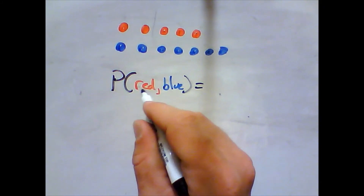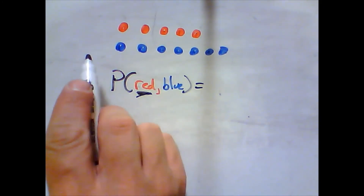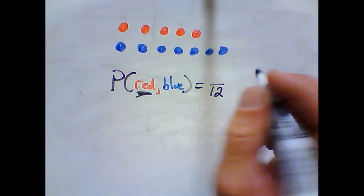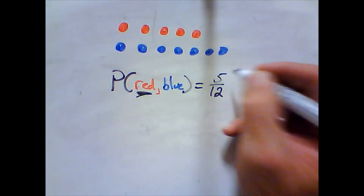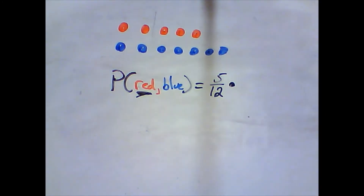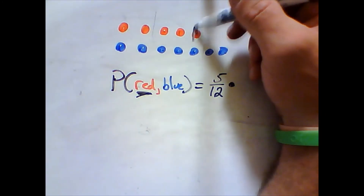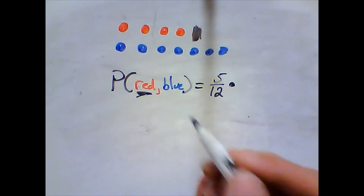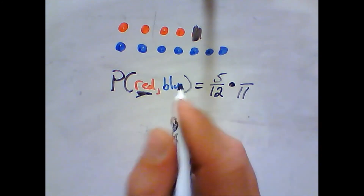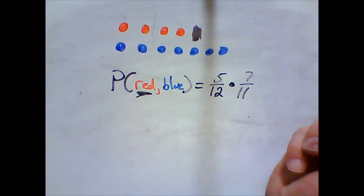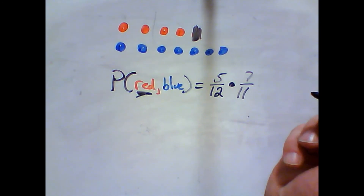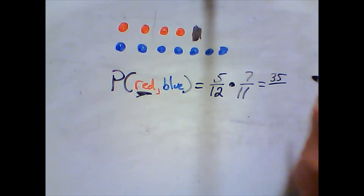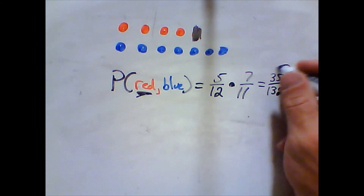When I first go to grab, how many marbles are there? There are twelve — five and seven is twelve. How many of them are red? One, two, three, four, five. A comma here means multiply. I grab a red marble — it doesn't matter which one, as long as it's red, because you have to succeed in both steps. Now how many marbles are there? Eleven. How many of them are blue? Seven. Nothing's going to reduce — that's thirty-five over one hundred thirty-two.